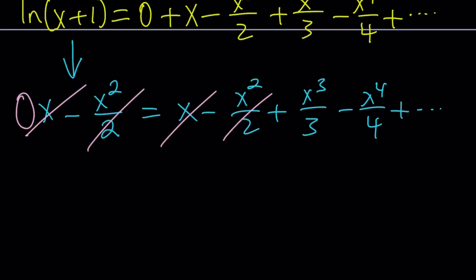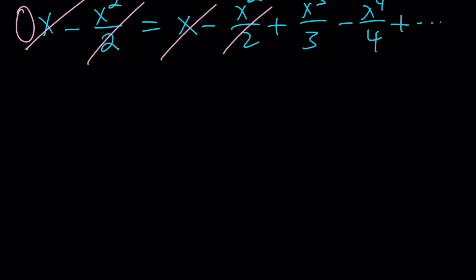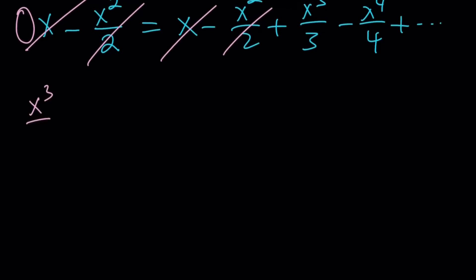So we can write it like this: x³ over 3 minus x⁴ over 4 plus x⁵ over 5 minus x⁶ over 6, so on and so forth. You get the idea, right? It goes on like this, but that's equal to 0.